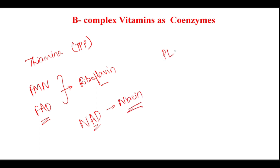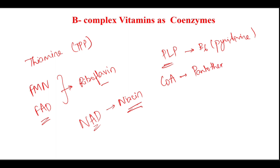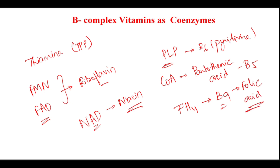Pyridoxal phosphate is derived from vitamin B6, that is pyridoxine. Coenzyme A is derived from pantothenic acid, which is vitamin B5. Tetrahydrofolate is derived from vitamin B9, that is folic acid. All of these are the B-complex vitamins which act as coenzymes.